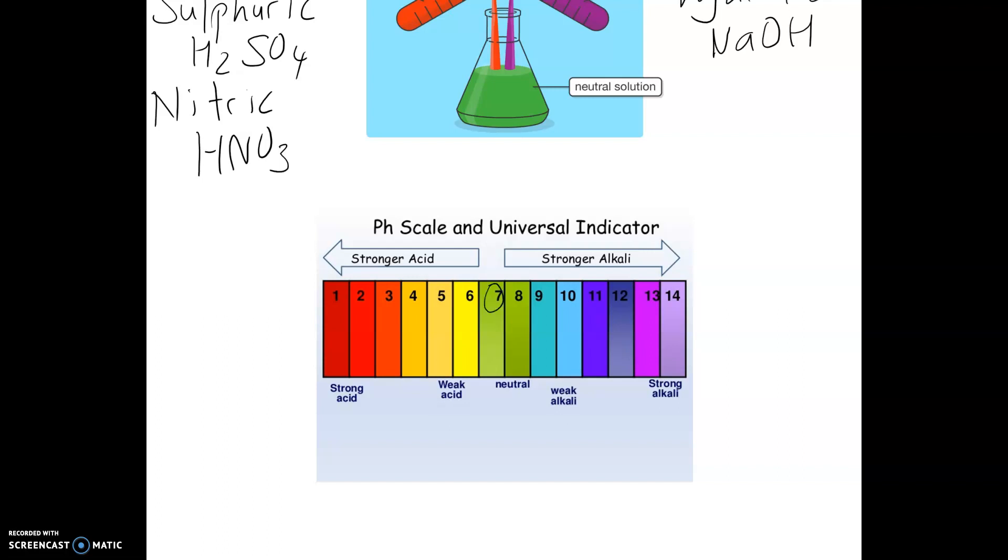Here's number 7, which is neutral. If you have pH 1 to 6, those are acids. 8 to 14 are alkalines. Anything closer to 7 are weak, and anything further away are strong. So pH 1 is a strong acid.